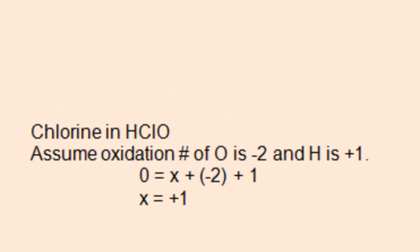Next, we'll determine the oxidation number of chlorine in HClO. This is a molecular compound, so the sum of the oxidation numbers must equal zero. Again, make the assumption that the oxidation number of oxygen is negative two, and also the oxidation number of hydrogen is positive one.